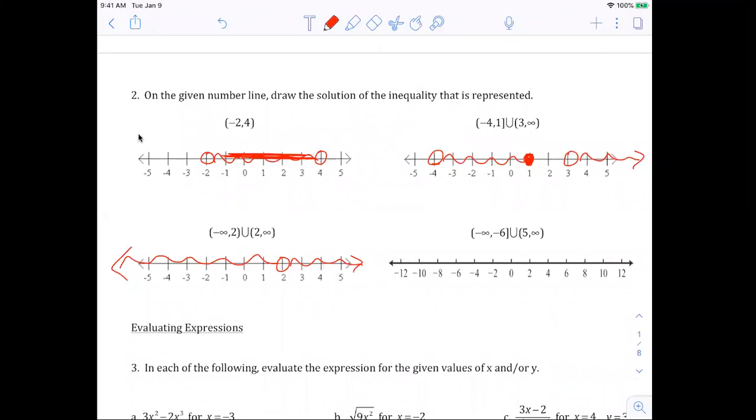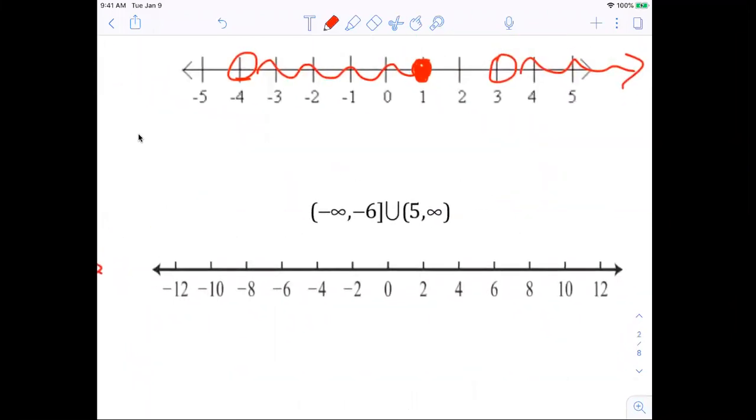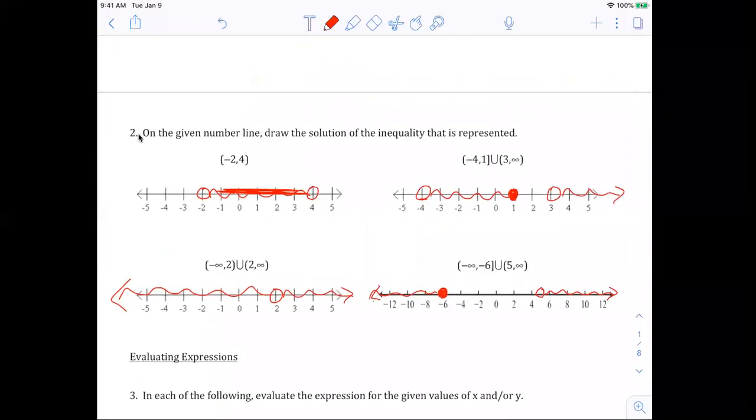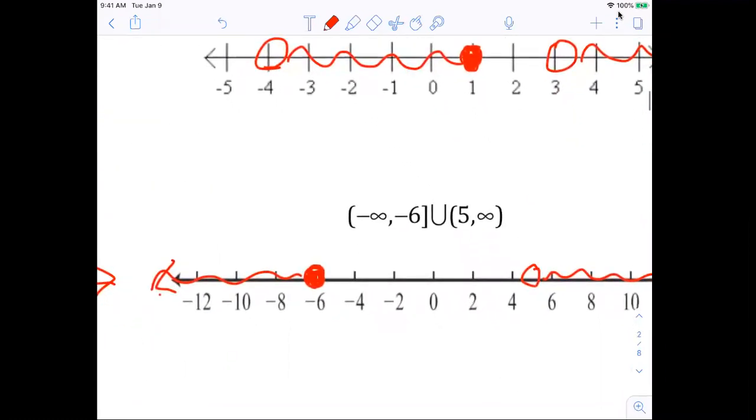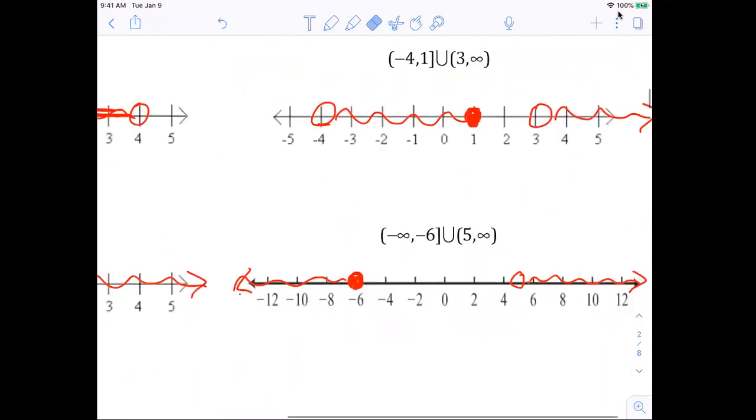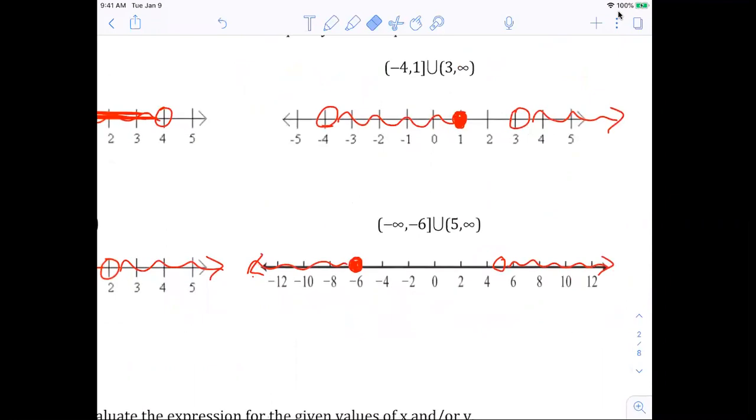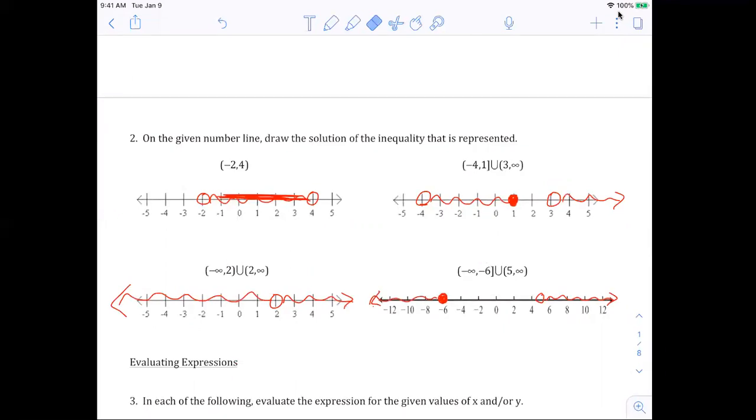On the bottom right, we have from negative infinity to negative six inclusive. So that's going to be a filled circle. Union. From five. So I'm going to have to estimate because it's not on the graph. To infinity. All right. Do we have any questions on those? What does the union mean again? Yeah, the union means it has two sections. So your answer could either be in this section or in this section. So it's like an or statement.